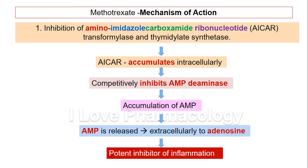Inhibition of AMP-deaminase causes accumulation of AMP. These accumulated AMP molecules are then released and converted extracellularly into adenosine. Together, AMP as well as adenosine act as potent inhibitors of inflammatory mediators. This is the major mechanism of methotrexate in treating rheumatoid arthritis.